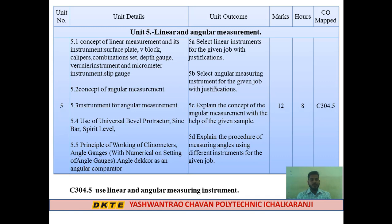Topic 5.2 covers the concept of angular measurement. Instruments used for angular measurement in day-to-day engineering include the universal bevel protractor, sine bar, spirit level, and angle dekkor.